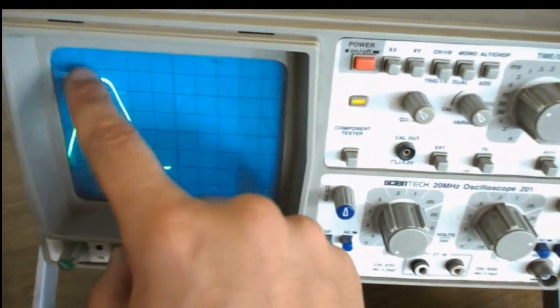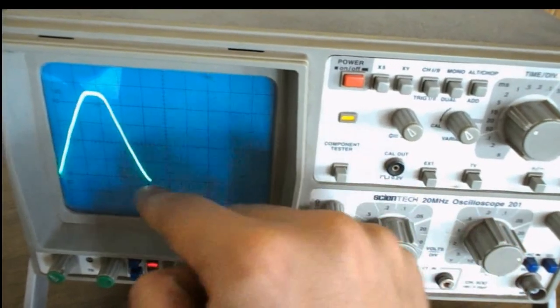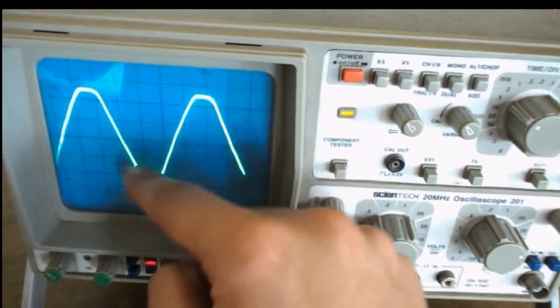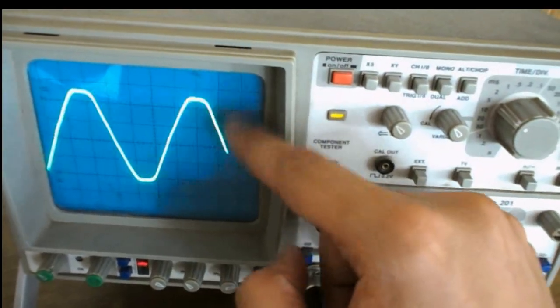So we can see there are one and two complete waves. So when this will be rectified, this negative portion will come in the upward side. Same will happen to this.